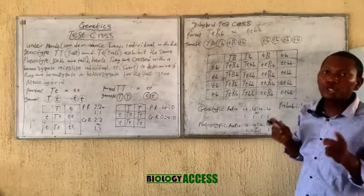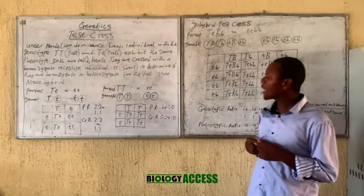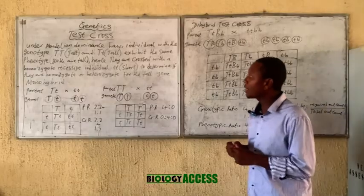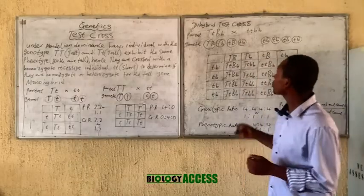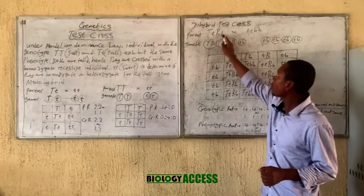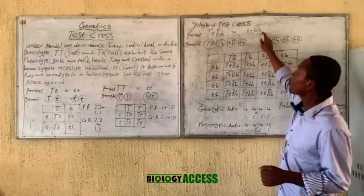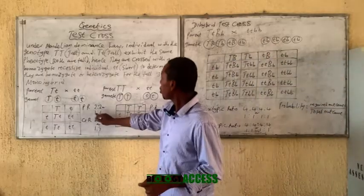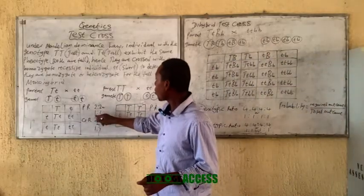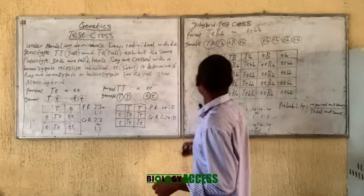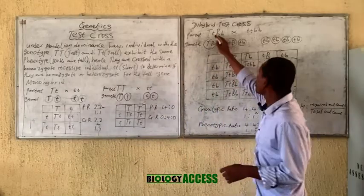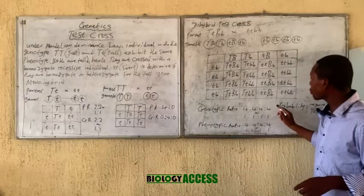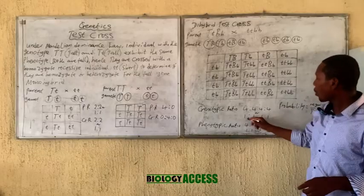Take note of this key point for test cross: if you cross the heterozygote with the homozygote recessive in a monohybrid cross, the ratio is one ratio one. If you repeat the same for a dihybrid cross, you still get one ratio one ratio one ratio one.